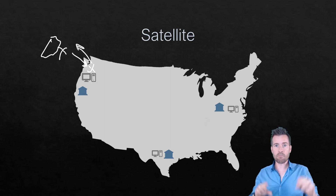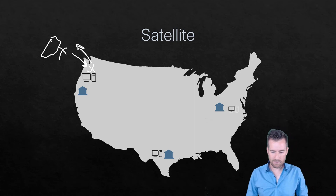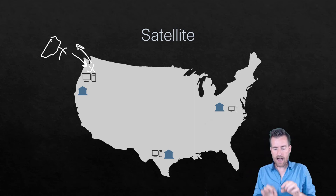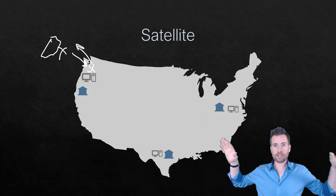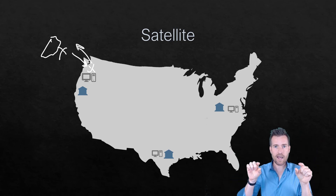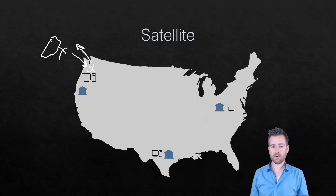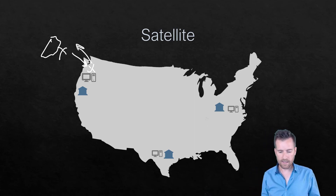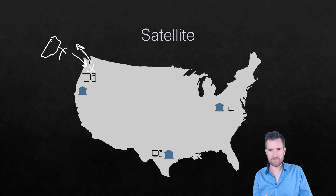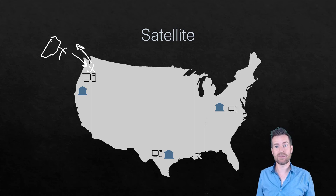More and more satellites are going up in the sky — SpaceX is putting up a large constellation — and not only are there more connections, but they are much lower in the atmosphere, allowing for quicker responses. With those quicker responses, we'll see better data transfer and satellite speeds will increase. This is an exciting technology, particularly for rural areas.